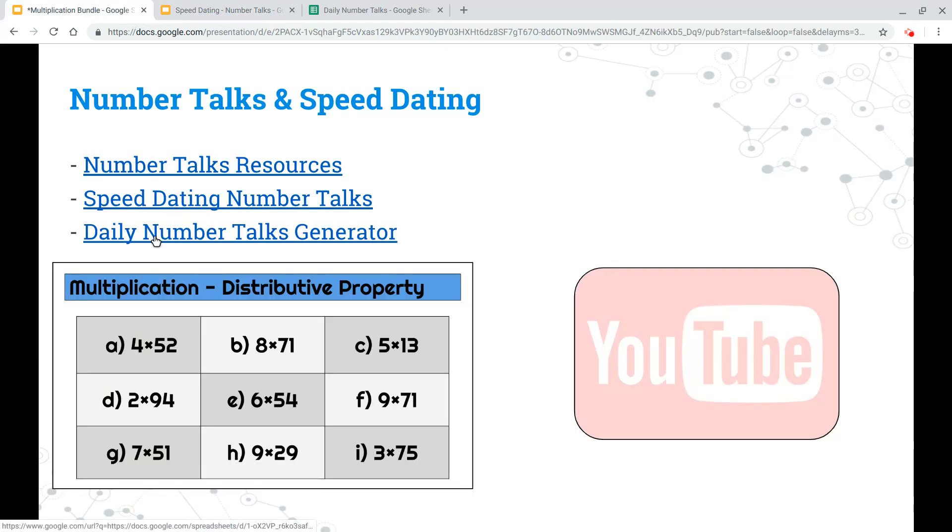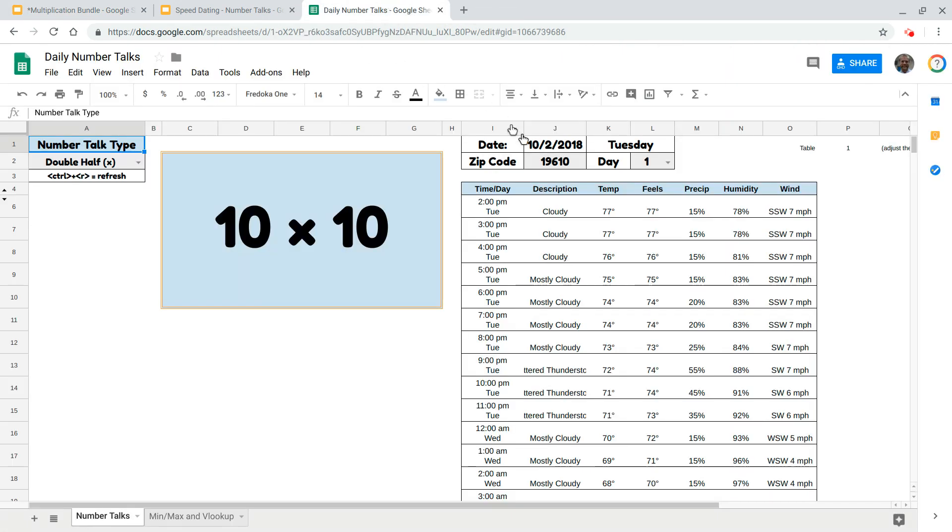The last thing on here is just a daily number talks generator. Use it if you'd like, but you can put in your zip code here, and it'll give you the weather for the week or for the day. You could do like doubling and halving, and every time you refresh this page, it'll give you a different problem.